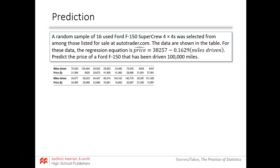We have a random sample of 16 used Ford F-150 SuperCrew 4x4s selected from those listed for sale at Autotrader.com. The regression equation is: the predicted price equals 38,257 minus 0.1629 times the miles driven. So there's a relationship between the number of miles driven and the predicted price of the truck.